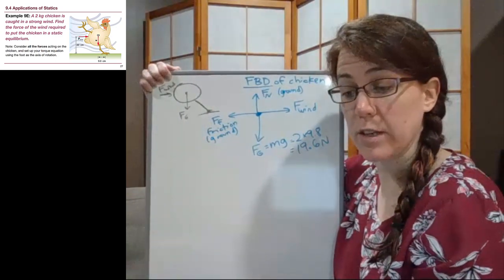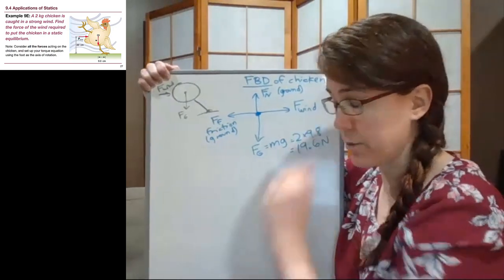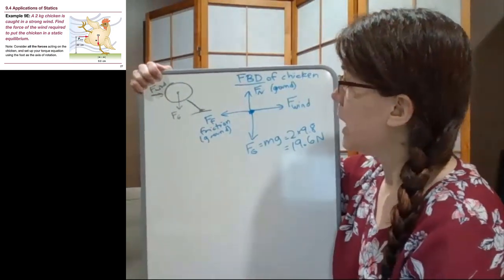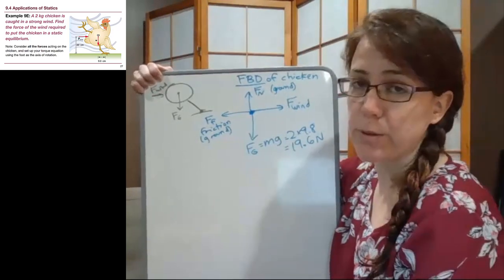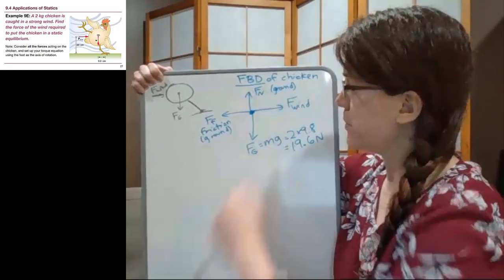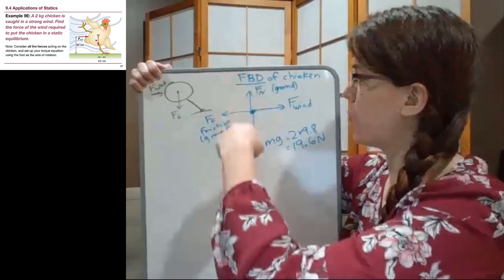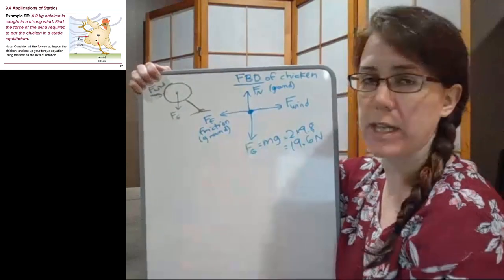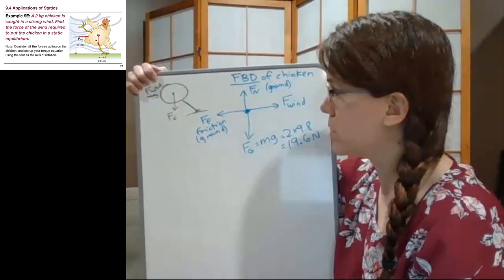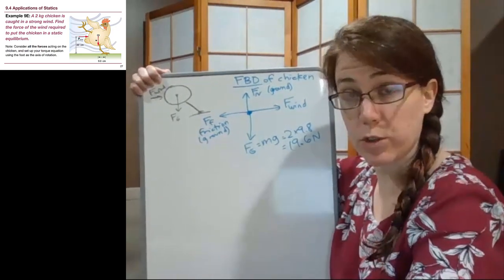Okay, so that looks like a standard chapter four, chapter five kind of force problem. And now we can see that these are going to be able to cancel each other out. There's some forces up and down, there's some forces side to side, and so we're pretty well set on this. So now we go to our torque diagram.